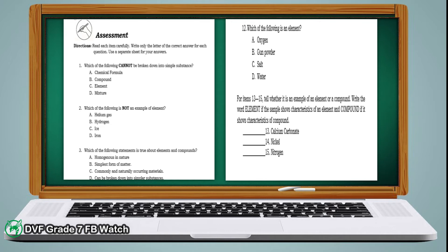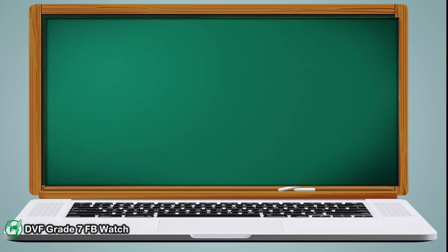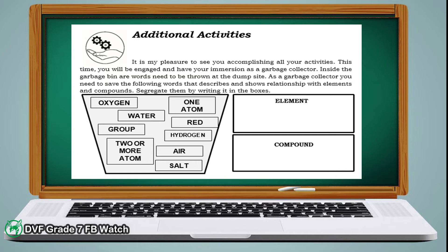Next is the assessment. You need to answer 15 questions. For numbers 1 to 12, write down the letter of your answer. For numbers 13 to 15, write the word 'element' if the sample shows characteristics of an element and 'compound' if it shows characteristics of a compound. For the additional activities, choose the following words that belong to elements or compounds and segregate them by writing them in the boxes.